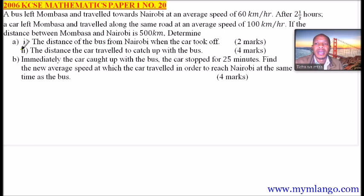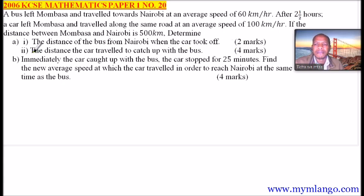Determine: Roman numeral 1, the distance of the bus from Nairobi when the car took off — two marks. Roman numeral 2, the distance the car travelled to catch up with the bus — four marks.